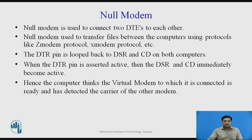Null modem is used to connect two DTE devices to each other, and is used to transfer files between computers using protocols like Z-modem or X-modem. The DTR pin is looped back to DSR and Carrier Detect on both computers. By looping back the Data Set Ready and Carrier Detector pins, when DTR is asserted, DSR and CD immediately become active, making the computer think a virtual modem is connected, ready and has detected the carrier of the other modem for receiving or transmitting data.